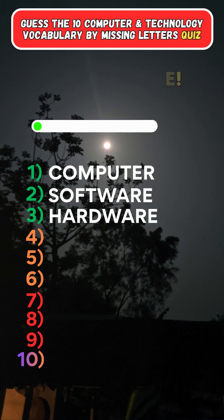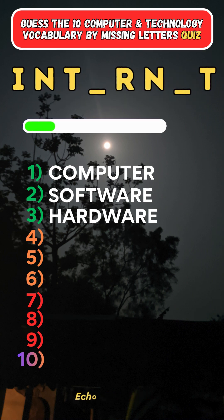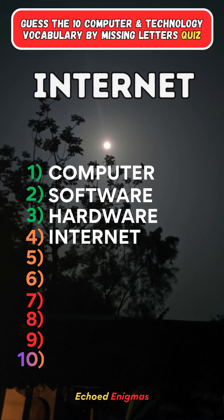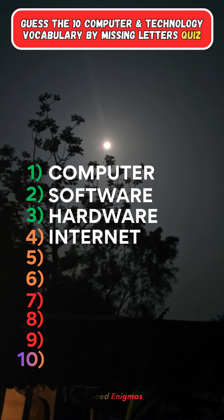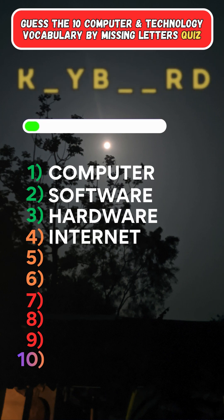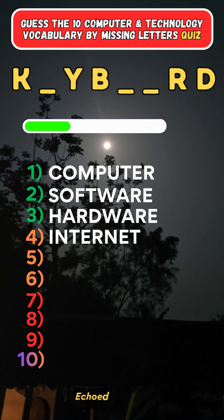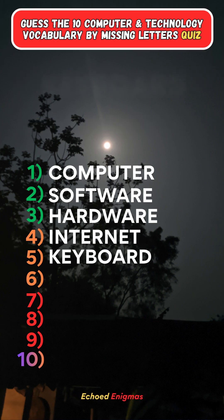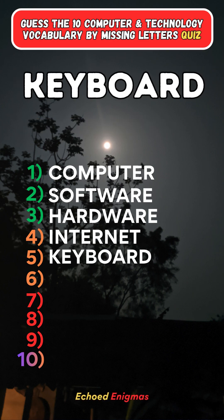Fourth one: Internet. Fifth one: Keyboard.